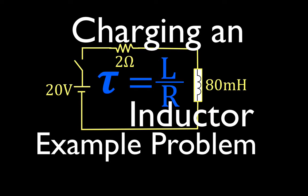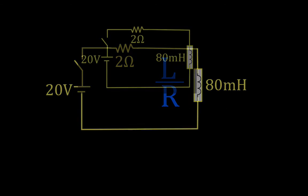Okay, as you can see in today's video, we're going to be going over charging an inductor, an example problem in a simple RL circuit. We're going to have a 2 ohm resistor, our R, and an 80 millihenry inductor, that is our L, and a 20 volt source. So let's just get started.